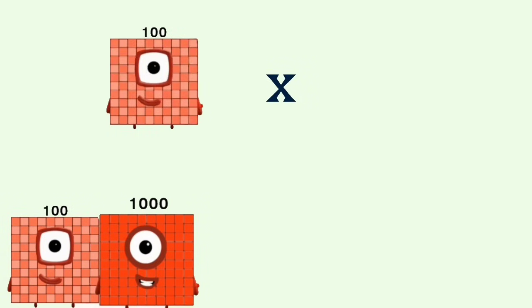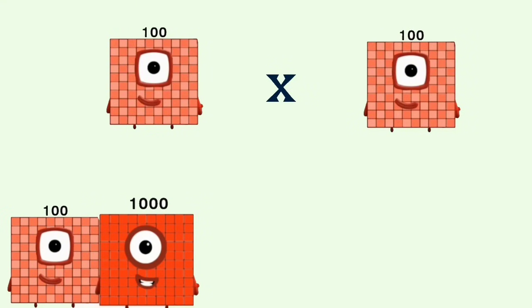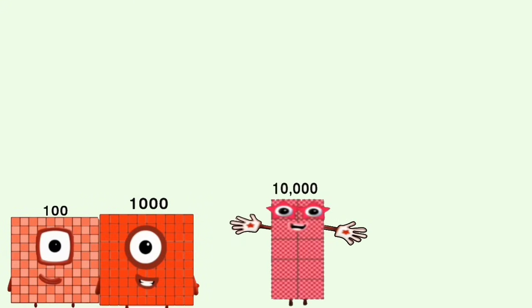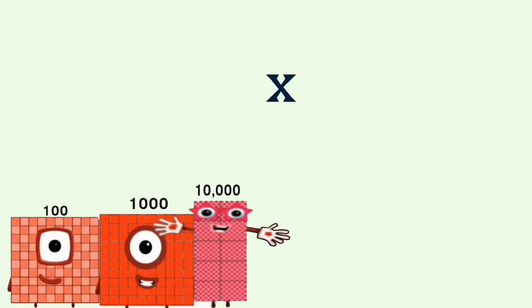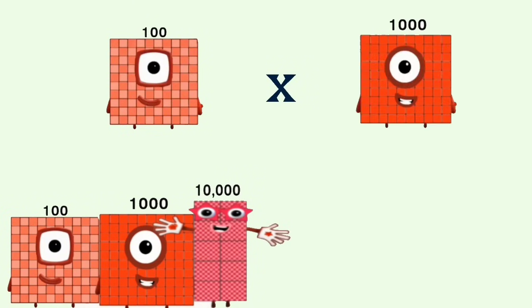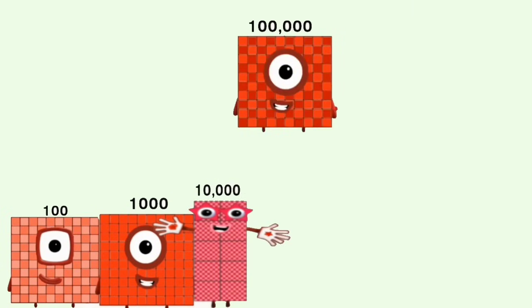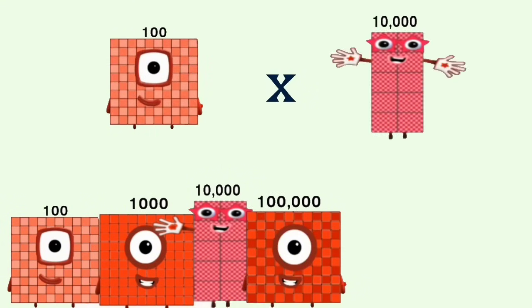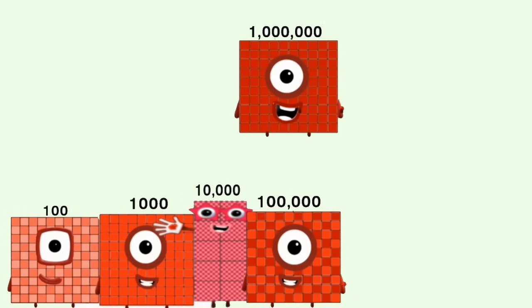100 times 100 equals 10,000. 100 times 1,000 equals 100,000. 100 times 10,000 equals 1,000,000.